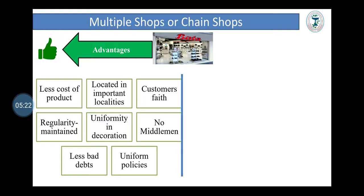Advantages of multiple or chain shop: Less cost of product as all purchases are made from the central office. They are located in important localities, thus convenient for customers. Customer faith is more because of fixed price and standard quality. Regularity is maintained by addressing stock shortages from another branch. There is uniformity in decoration and window display. There is no middleman — direct contact between producer and consumer. Bad debts are not seen as cash payment is adopted, and uniform policies make control and supervision easy.